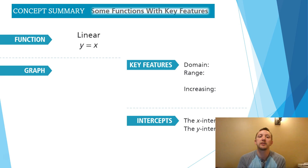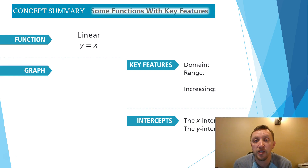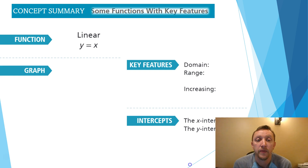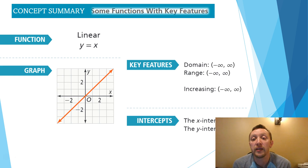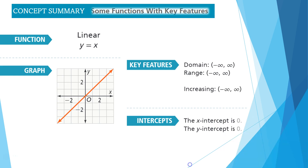Let's look at some parent functions you need to be familiar with. The first parent function we've been working with in Lesson 1.1 is the linear function. The most basic form is y = x, and its graph looks like a straight line through the origin. The domain is from negative infinity to infinity, the range is also from negative infinity to infinity, and it's increasing from negative infinity to infinity — not decreasing at all. The intercepts are both at 0.